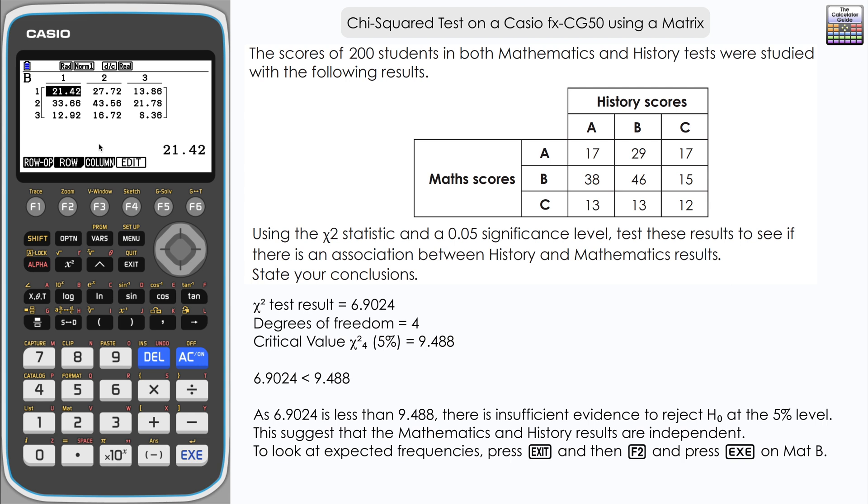Just in case you needed to write those down or wanted to look at them, these are the expected frequencies that would have been used in the test. They are available for you to have a look at if you go back into the matrix mode.